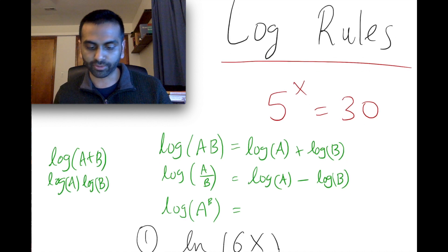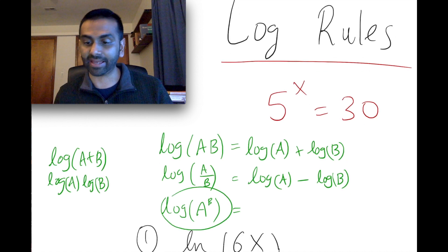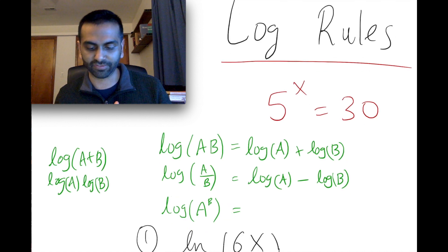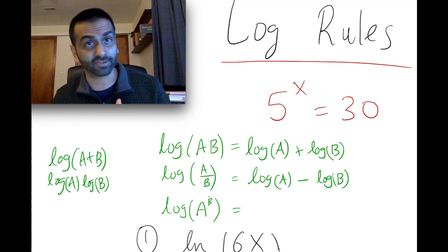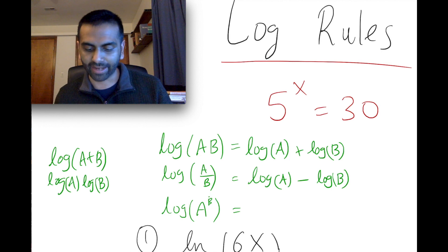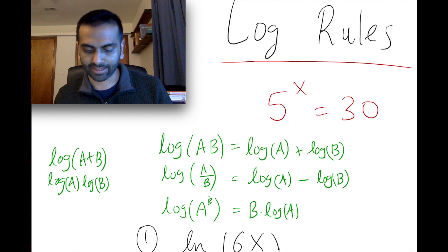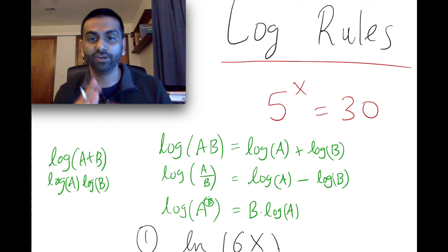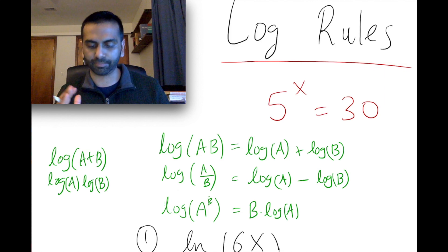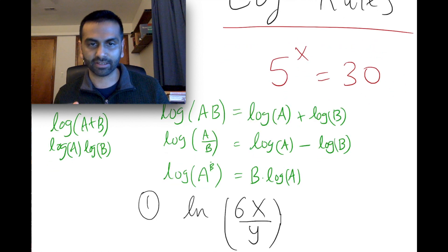The third rule is the log of a to the power of b. If you have something raised to a power on the inside of a log, that equals b times log of a — meaning the exponent can come out front as b times log of a.